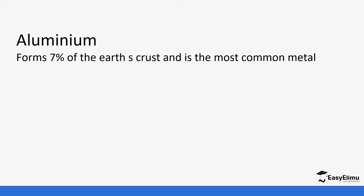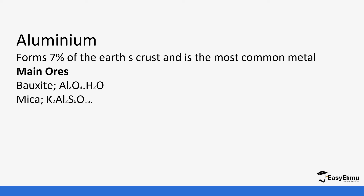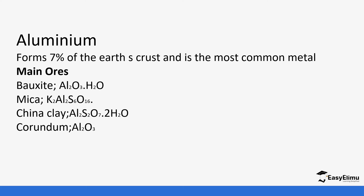First, let's discuss the ores of aluminium. Aluminium forms around 7% of the earth's crust, so it's a very common metal. Some main ores are bauxite, mica, china clay, and corundum. Remember, bauxite is the main ore we are going to be working with today.